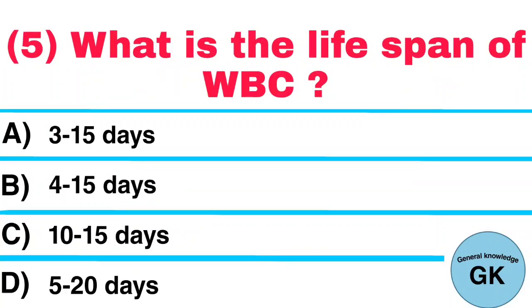Question number 5. What is the lifespan of WBC? A. 3 to 15 days. B. 4 to 15 days. C. 10 to 15 days. D. 5 to 20 days.